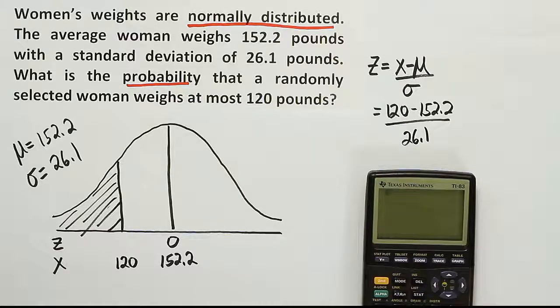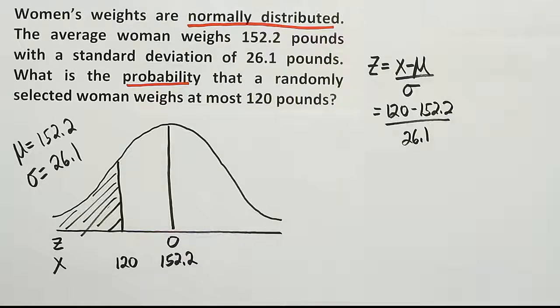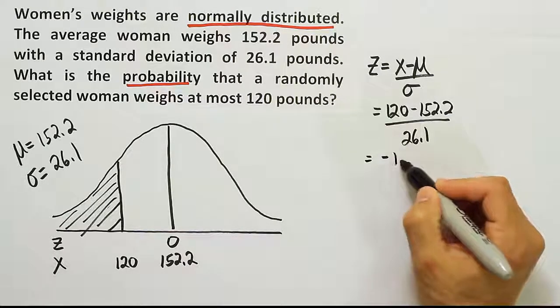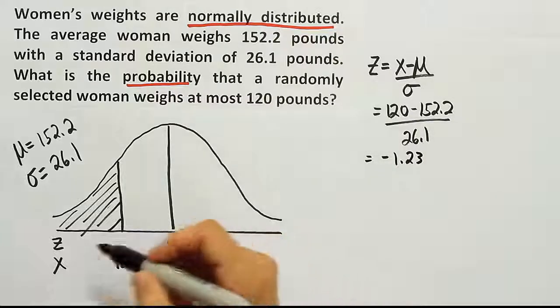So we have 120 minus 152.2 divided by 26.1. When you're done, you get negative 1.23. That's our z-score.